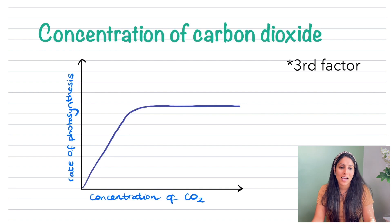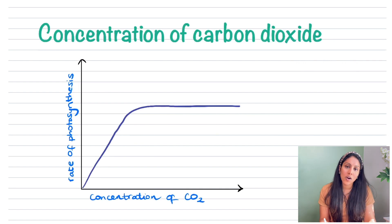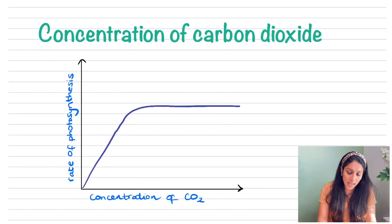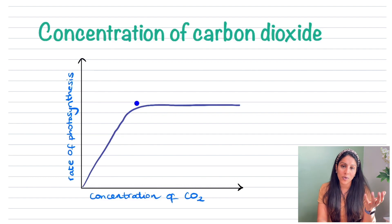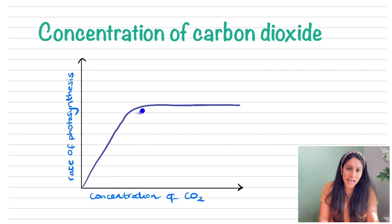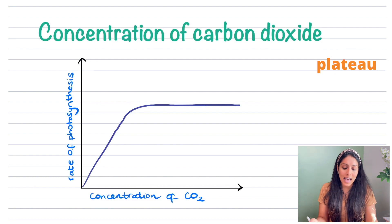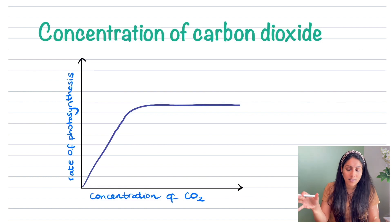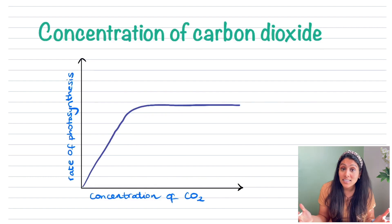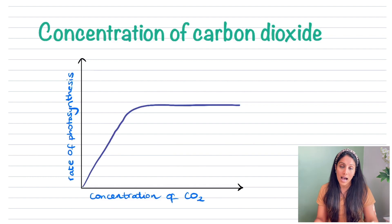The second factor we're looking at is the concentration of carbon dioxide. This graph has a very similar shape to the previous one. As the concentration of carbon dioxide increases, the rate of photosynthesis also increases. But again it starts to plateau — something else is limiting the rate of photosynthesis from increasing further. This could be light intensity or the amount of chlorophyll that the plant has.